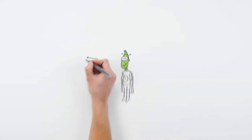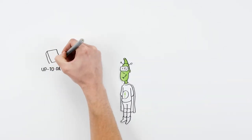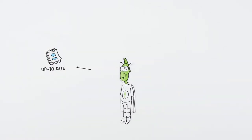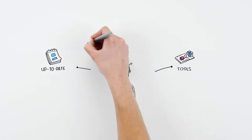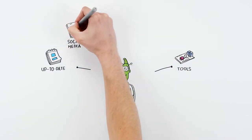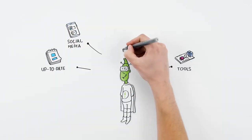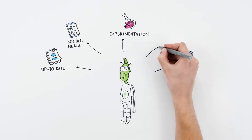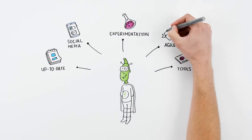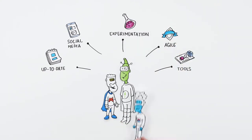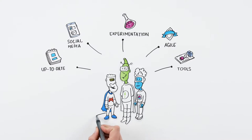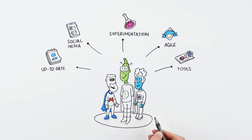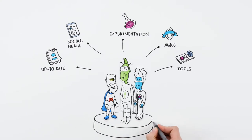For digital youth work, you need to be up to date with the latest tools and social media. This requires constant experimentation. In order to be agile in youth work, it is essential to have an ongoing exchange of ideas with other youth workers in your organisation, national or international community.